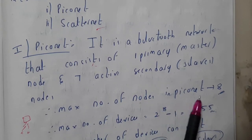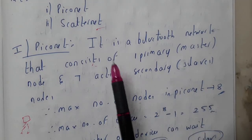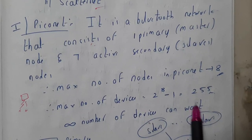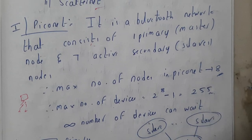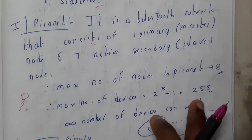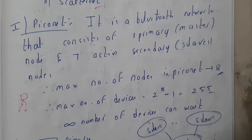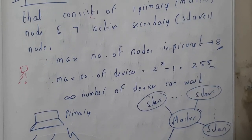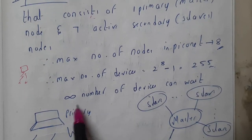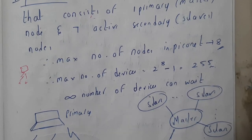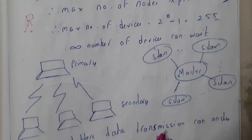The maximum number of active nodes in the piconet will be eight, whereas the maximum number of devices will be 2^8 minus 1, that is 255. Eight devices can be connected and the rest of the devices can be in some other states like a waiting state. So an infinite number of devices can wait in standby states.